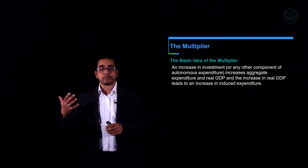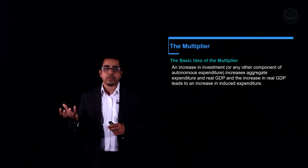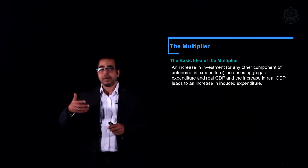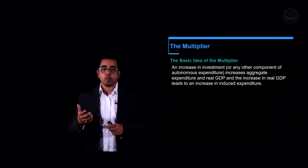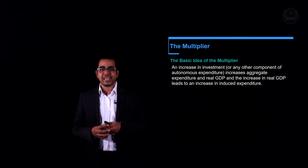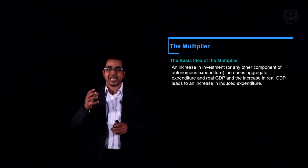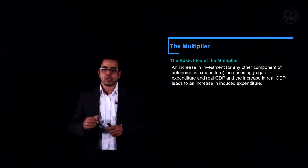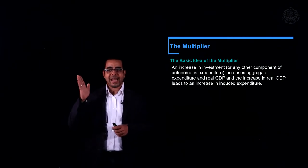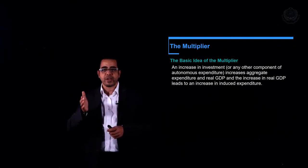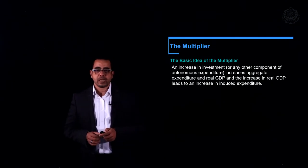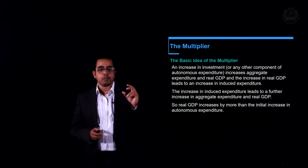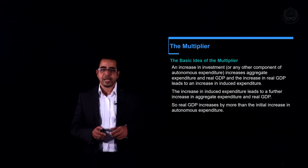This will also encourage further consumption by people using the road, as they may consume more sandwiches. So what happens here is that the initial investment of one billion was translated into a higher number when it comes to GDP. An increase in investment will actually induce a further increase in aggregate expenditures, and the end result is that GDP will increase by more than the initial increase in autonomous expenditure.